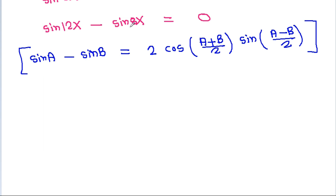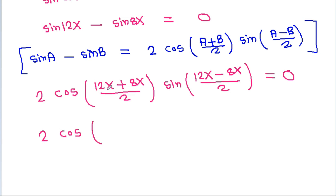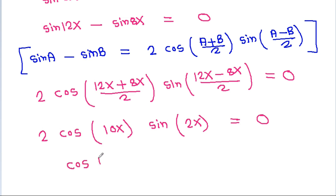Applying the sum-to-product identity, sin(12x) minus sin(8x) equals 2·cos((12x+8x)/2)·sin((12x−8x)/2), which gives 2·cos(10x)·sin(2x) equals 0.